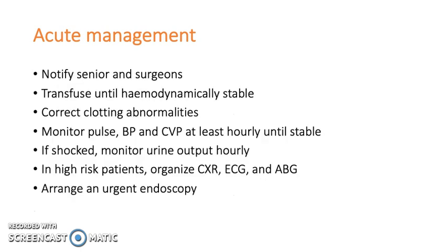After the ABCDE assessment, notify the senior and surgeons to get them involved as early as possible so the patient's prognosis doesn't worsen. Transfuse until haemodynamically stable and correct clotting abnormalities. Monitor pulse, blood pressure, and CVP at least hourly until stable. If shocked, monitor urine output hourly. In high-risk patients, organise chest X-ray, ECG, ABG, and arrange urgent endoscopy.